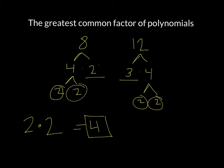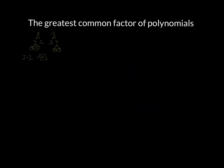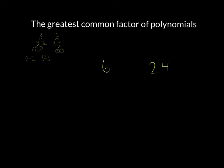Now you get to a point where you don't have to do the prime factorization of these numbers — you start to see what the factorization is. What we want to look at is that 6 goes into 24, so 6 is both a factor of 6 and 24. So the GCF between 6 and 24 would be 6.